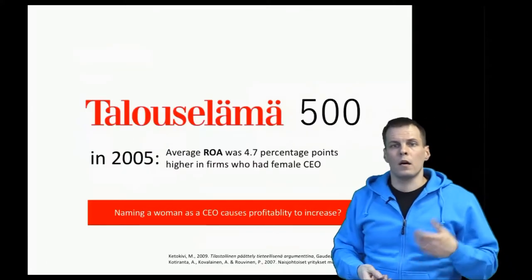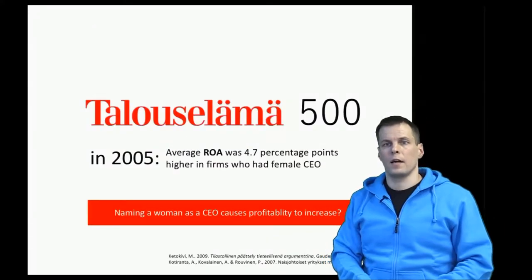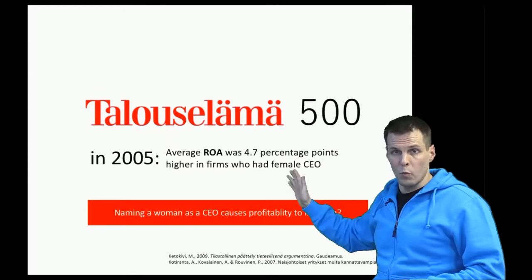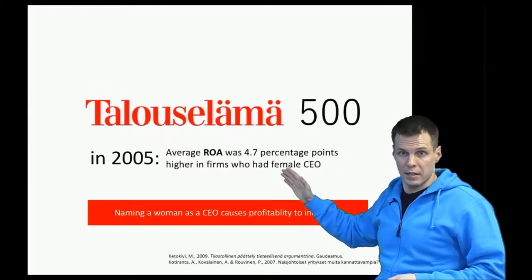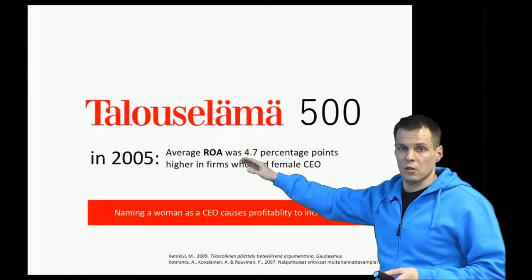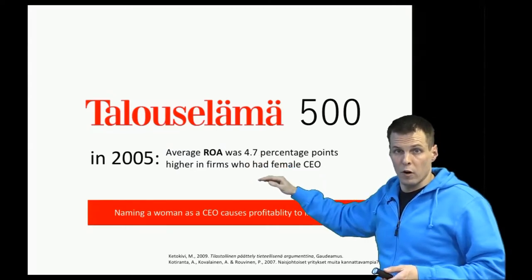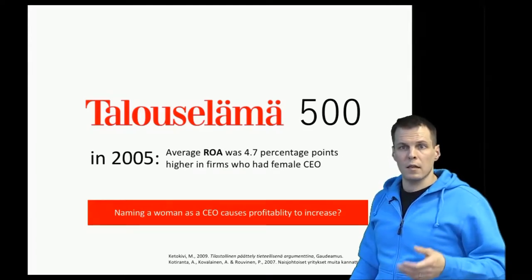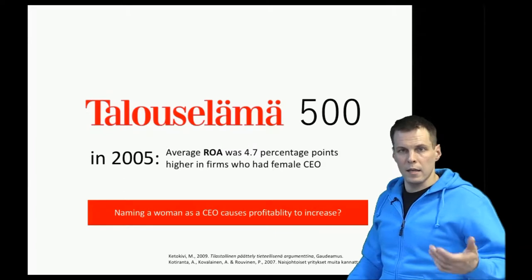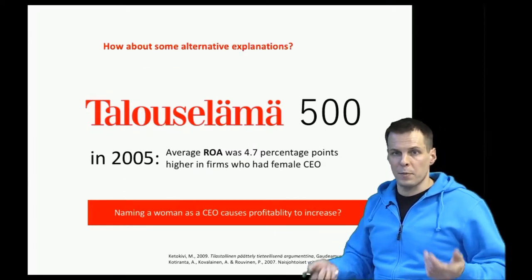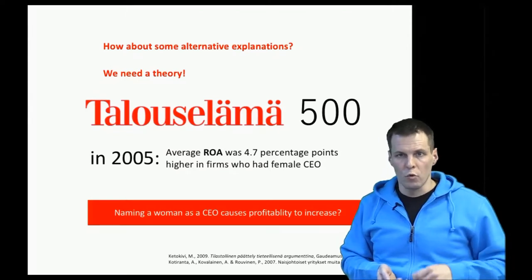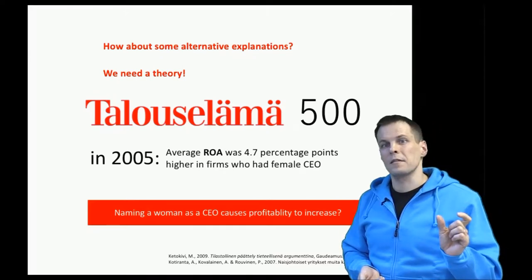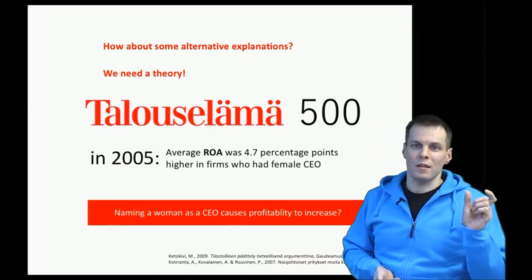So how do we make a causal claim? We have identified a 4.7 percentage point difference, and let's say we have some way of identifying that it can't be due to chance alone — there is a consistent association that women-led companies are more profitable than men-led companies. To determine whether it's a causal effect, we have to ask why there is a difference. We need to rule out alternative explanations, because there is a reason for the correlation — we just have to discover what it is.